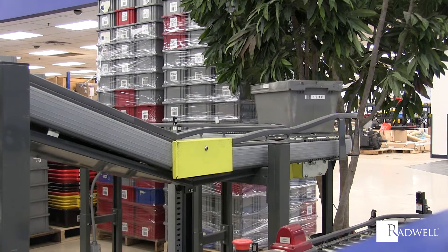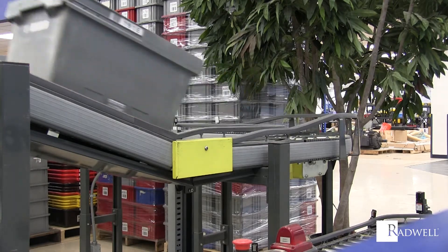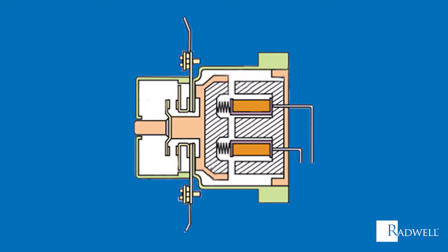A contactor is constructed of a few key components. Its first main component is the plastic or ceramic enclosure. Serving as the housing, the enclosure protects from dust and the external environment, and allows for safe opening and closing of contents.